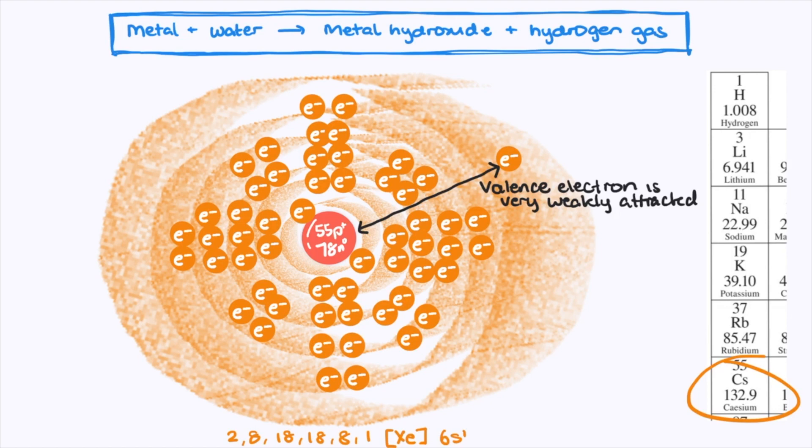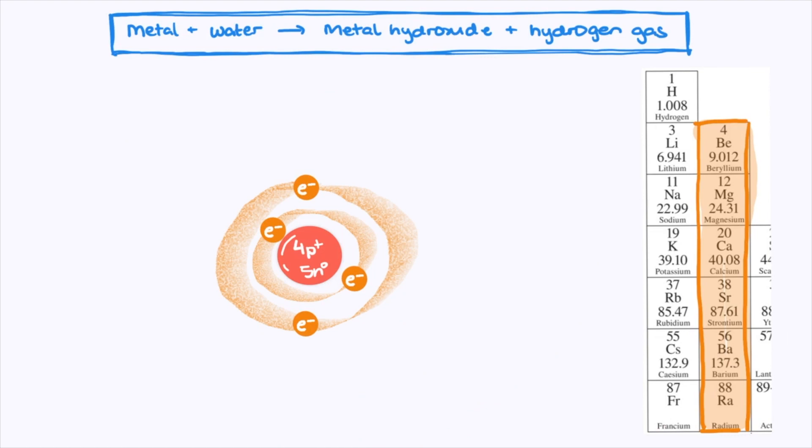Group 2 elements react much less vigorously because the second electron that must be lost to form the cation is held on much stronger, so it's not as easy to lose. In fact, beryllium doesn't react with water because of this.